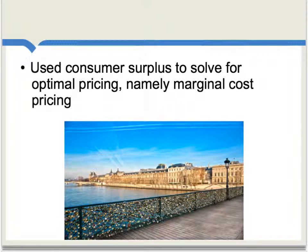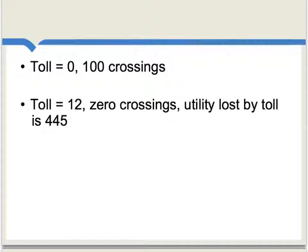Of course, this is all foundational for modern microeconomics. In Dupuis' exact example, he said if you have a toll of zero, you'll get 100 crossings. At a toll of 12, you'll get zero crossings. He listed tolls in between and the number of crossings, and he found that at the highest toll the utility lost amounts to 445, and the utility surplus is maximized at the toll being equal to zero. Again, this is all right on the mark.